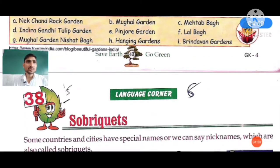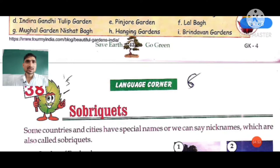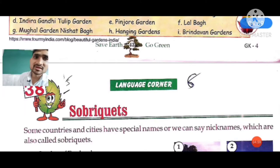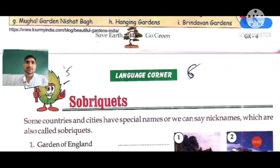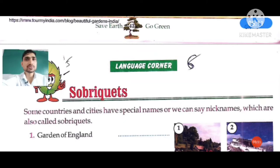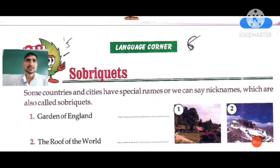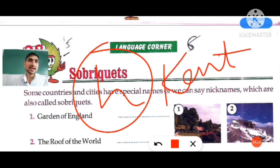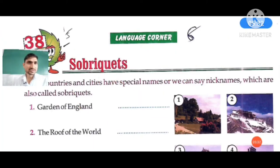Now the next chapter is Language Corner, chapter number 38. Some countries and cities have special names — we can call them nicknames. The first one: which city is known as Garden of England? You have to find the answer from your book's help box and choose option H. The right answer is Kent — K-E-N-T.